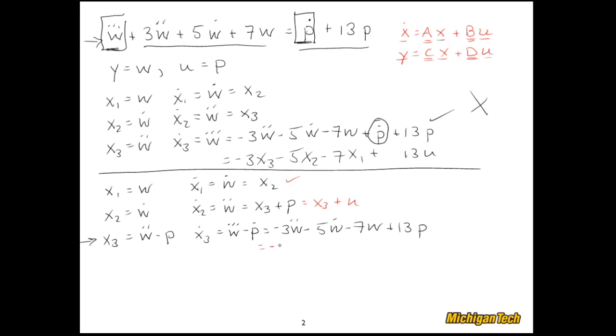And finally, this one we have to fiddle with a bit. So negative three W double dot is equal to X3 plus P, which is really U. Minus five W dot, which is X2, minus seven W, which is X1, plus 13 P.